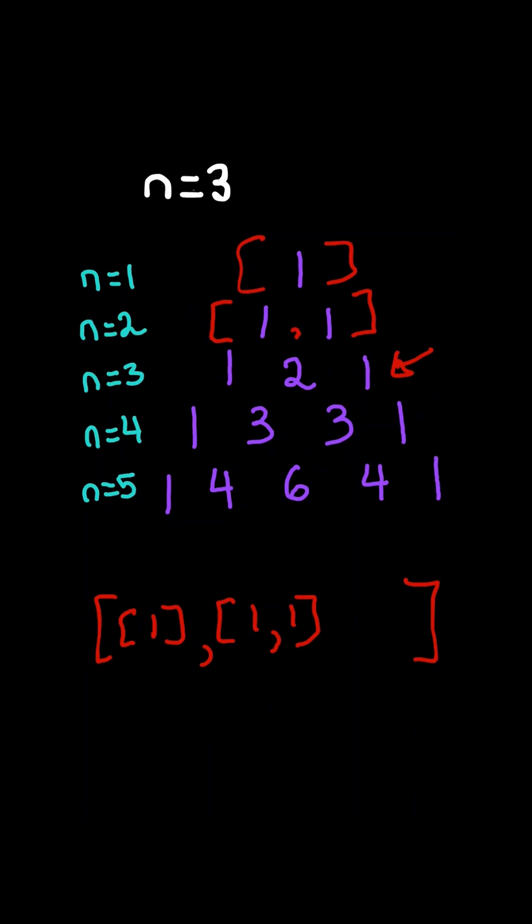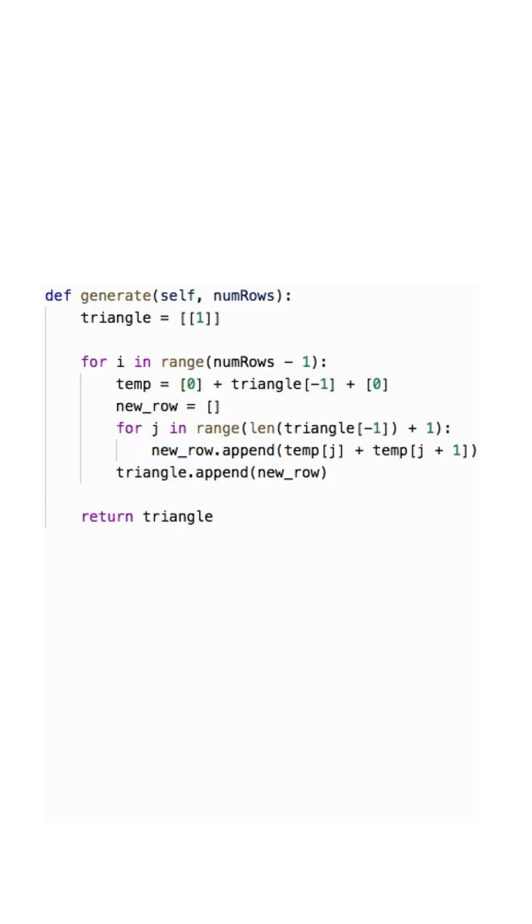We do the same trick of prepending and appending a zero to the previous row, and we continue the algorithm. And here is the code to do so.